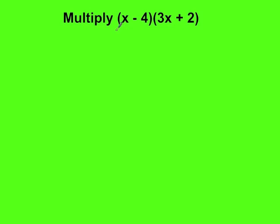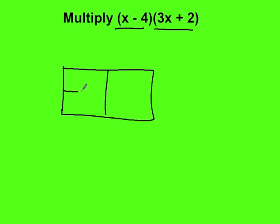So we're multiplying x minus 4 by 3x plus 2. We're going to use the table method, so we'll make a table. Our table will consist of x and negative 4 on one side. The other side of our table will be 3x and positive 2.